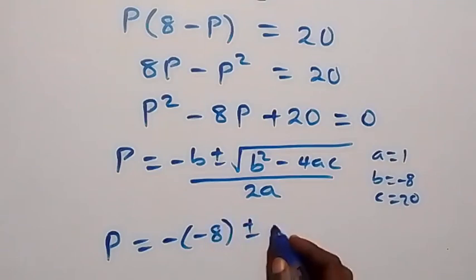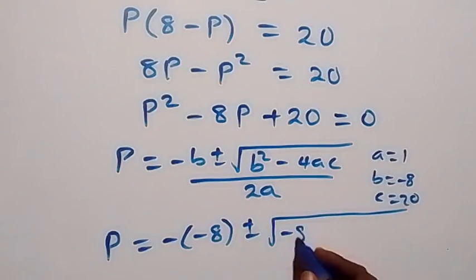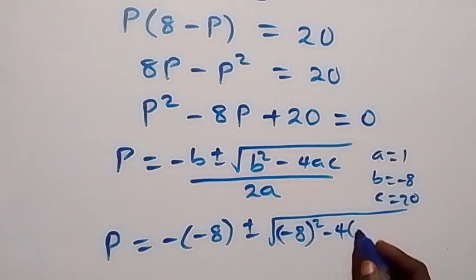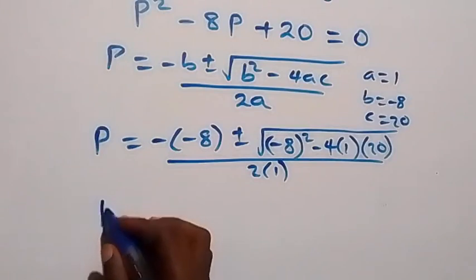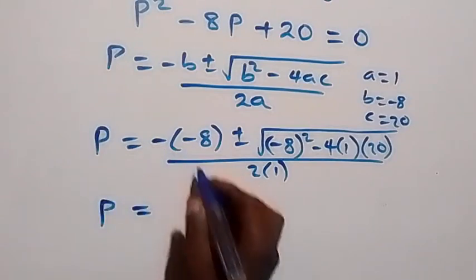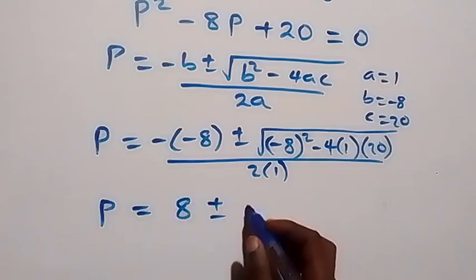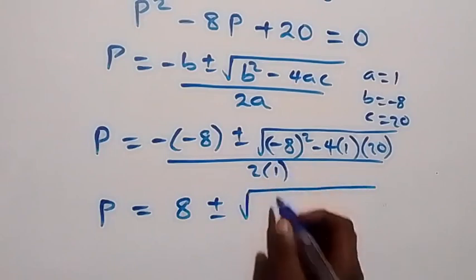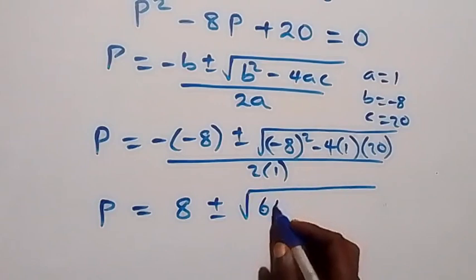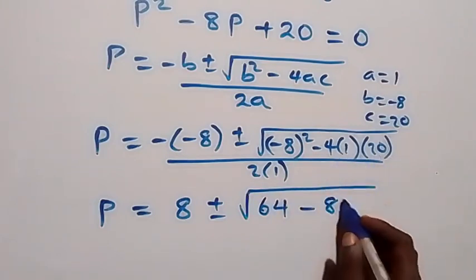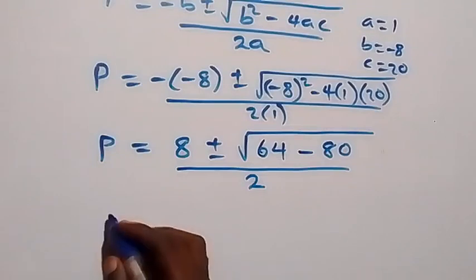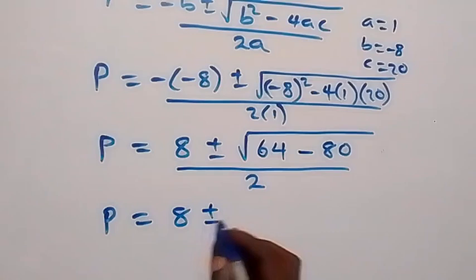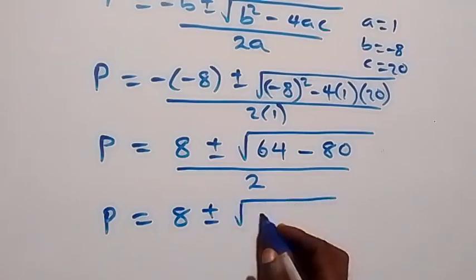Substituting, we get p equals negative (negative 8) plus or minus the square root of (negative 8) squared minus 4 times 1 times 20, all over 2 times 1. That simplifies to p equals 8 plus or minus the square root of 64 minus 80, which gives p equals 8 plus or minus the square root of negative 16, over 2.